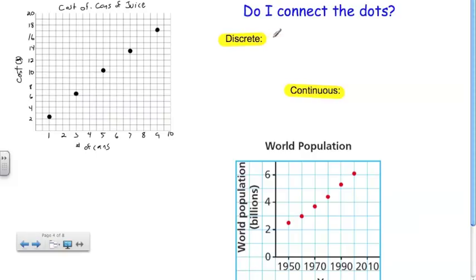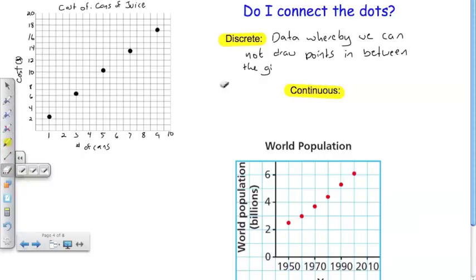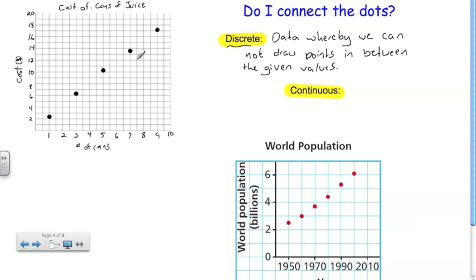When we can't draw plot points between our data points, when it doesn't make sense, we have discrete data. So discrete data is data whereby we cannot drop points in between the given values. Essentially meaning if you can't draw a series of points between these values, if it doesn't make sense, then you have discrete data. In this case, it doesn't make sense. It wouldn't make sense to draw one at four and a half or three and a half. So we don't have a continuous graph here, we have a discrete graph.